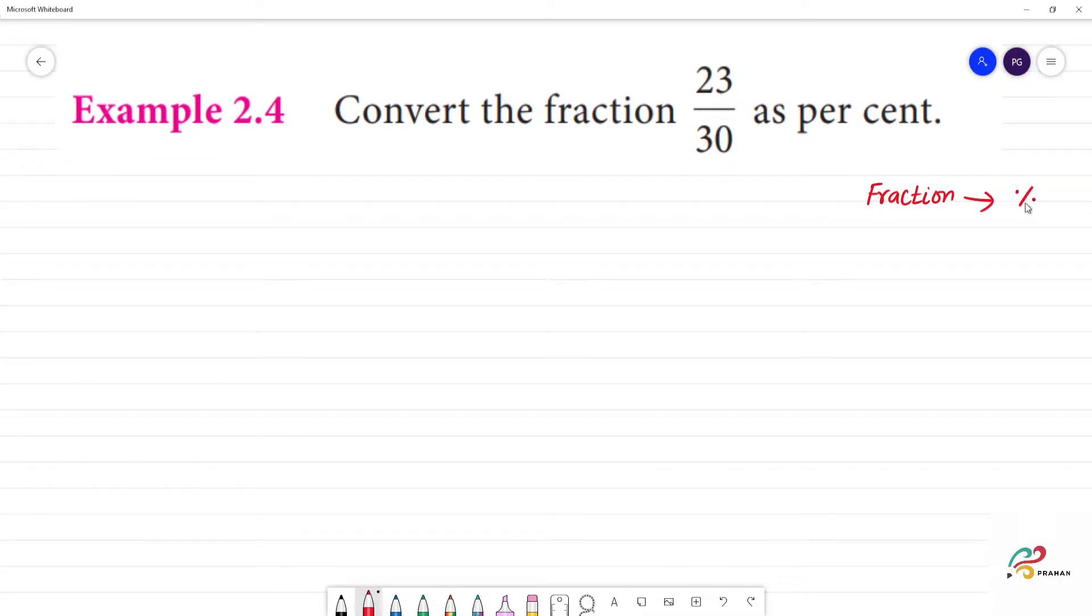Fraction to percentage convert, we do the fraction multiplied by 100. This is easy. That's the steps. Finally, the fraction multiplied by 100, we do the answer. That's the number of percentage.